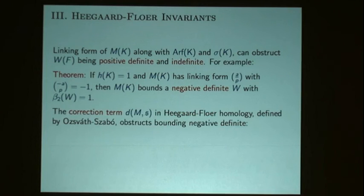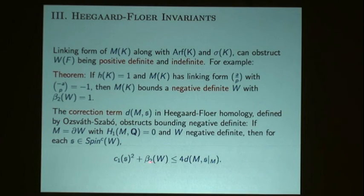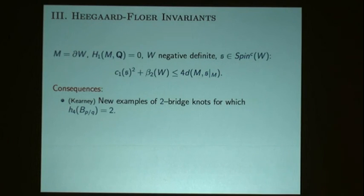Now we're in a setting where you can use Heegaard Floer theory to obstruct negative definiteness. In particular, what we found useful were the correction terms from Heegaard Floer homology. The relevant theorem: if you bound a negative definite manifold with rational homology sphere boundary, you get constraints on the first Chern class of the spin-C structure and the second Betti number of W. The terms on the left are completely determined by the algebraic topology of the four-manifold W, so we can control them algebraically. This is a smooth invariant.